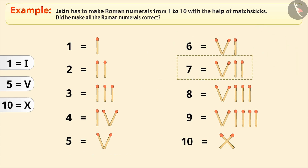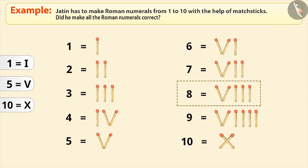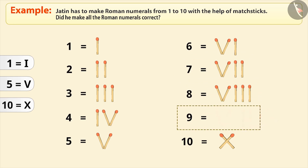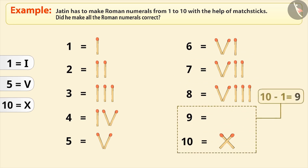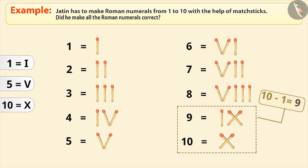Similarly, we write 7 and 8 as shown here. Writing 9 this way is incorrect. The correct method is by subtracting 1 from 10, which gives us this numeral.